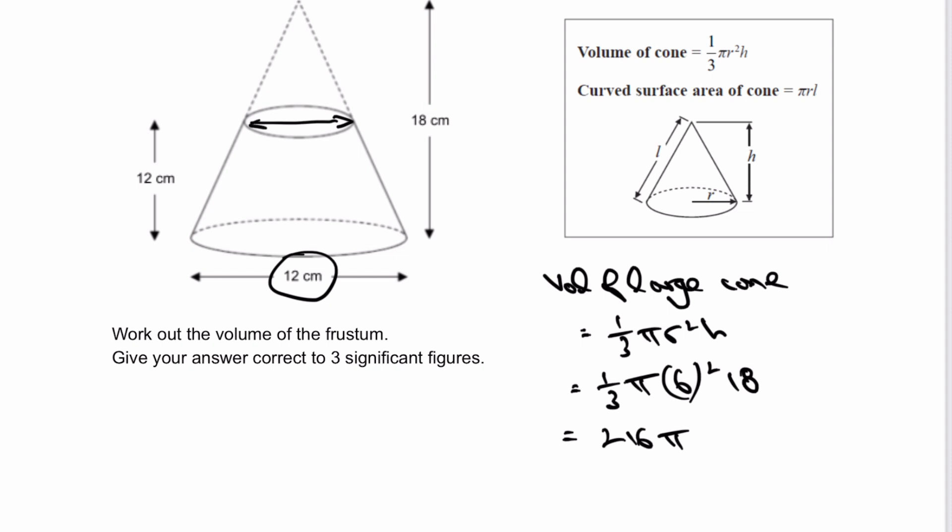What we do know is the height of the frustum and the height of the large cone is a multiple of 1.5, because 1.5 multiplied by 12 is 18. Therefore, to find the diameter of the small cone, I'm going to divide 12 by 1.5, and I get 8 as the diameter of the small cone.